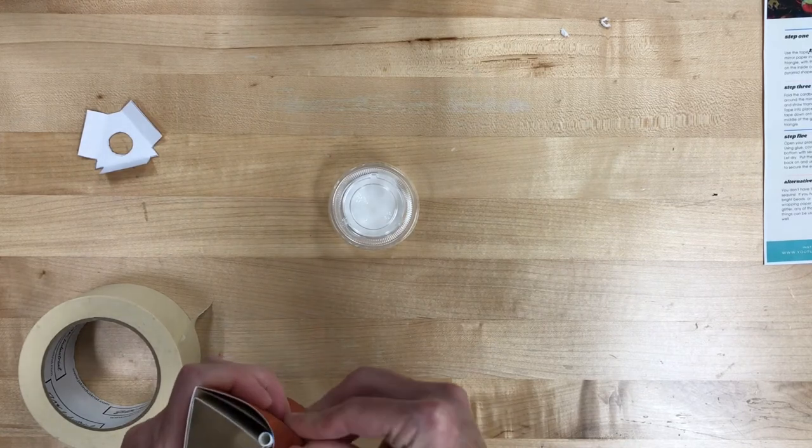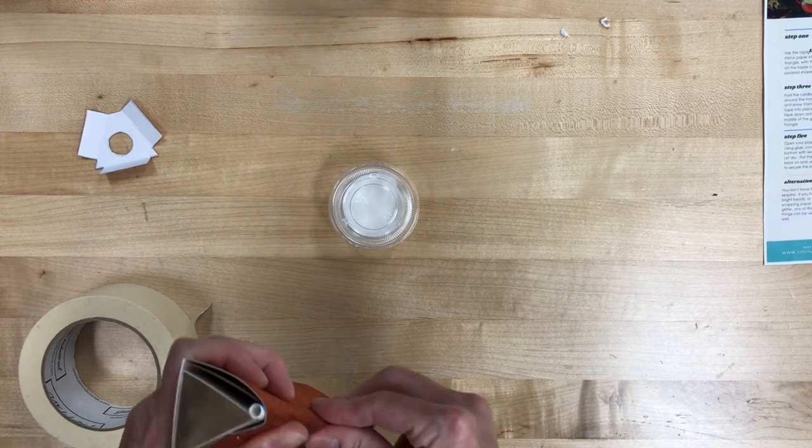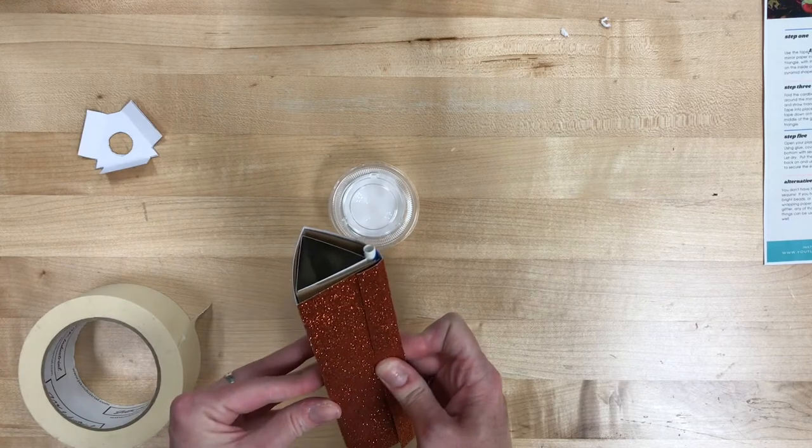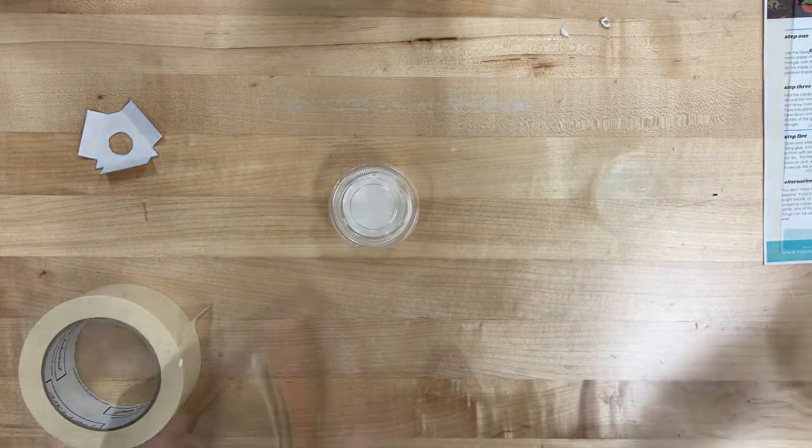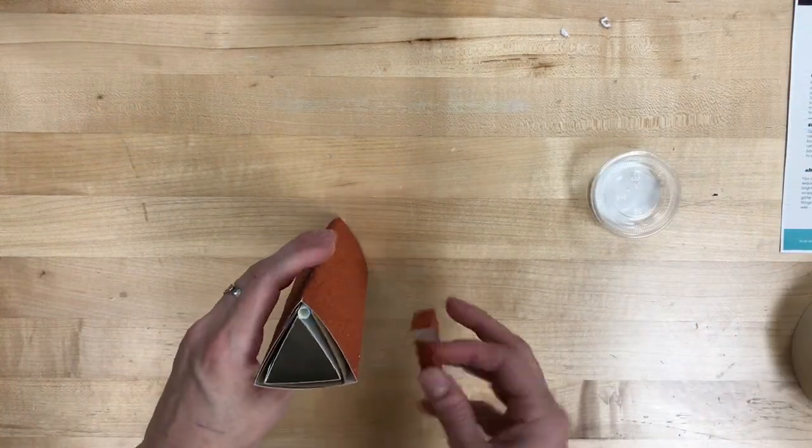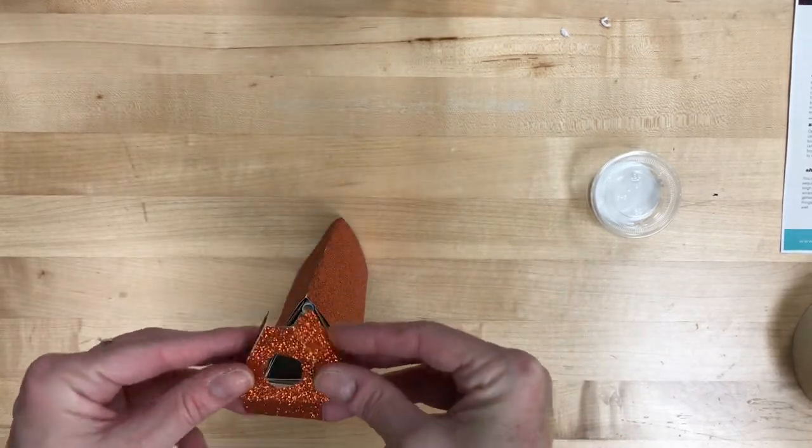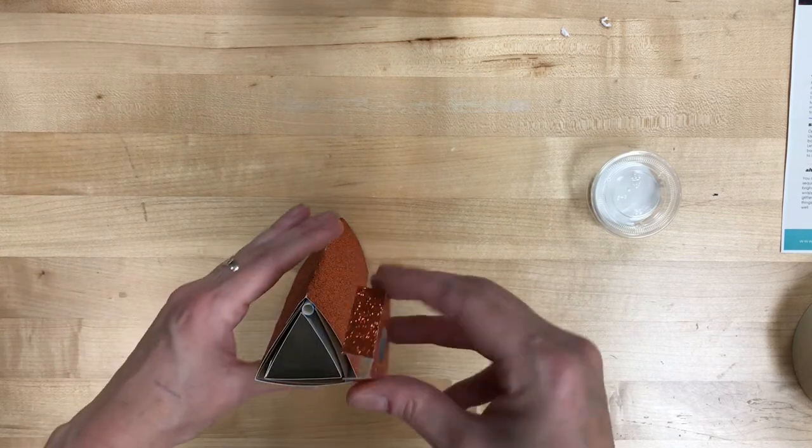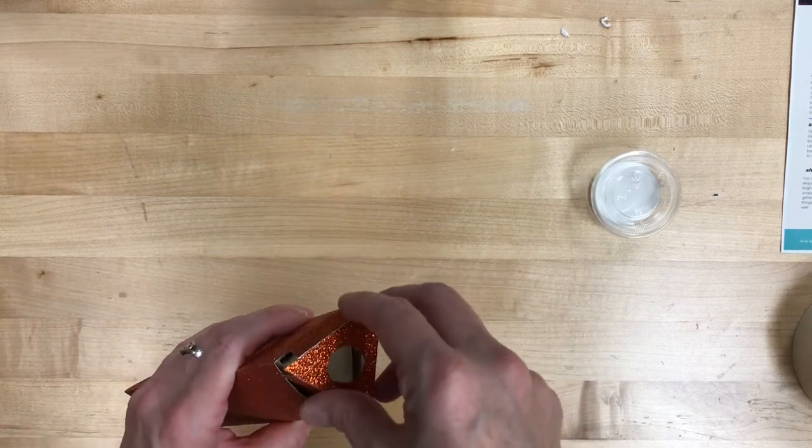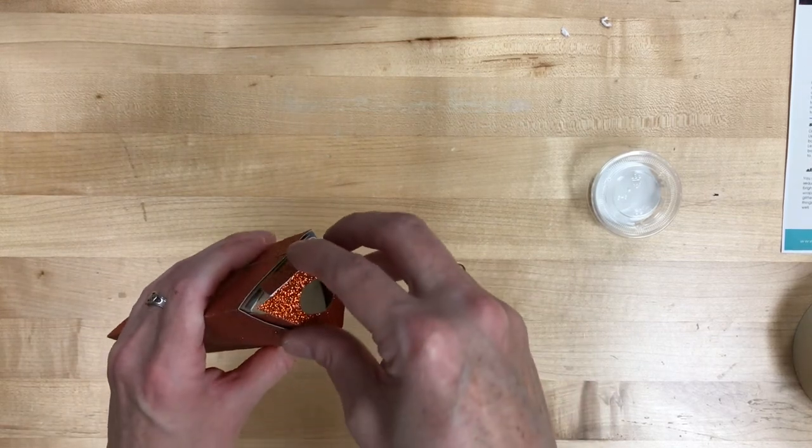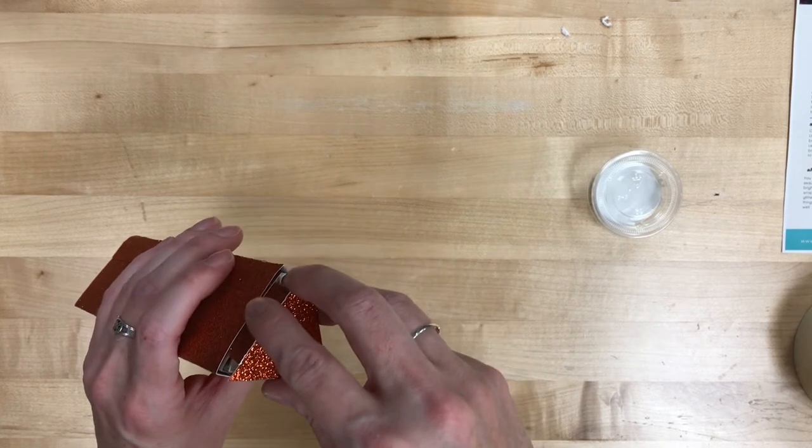You could even wrap some string around it to hold it in place and walk away and go do something else and come back if you need to. Then, once your glitter paper is secured, you're going to bend in the rectangles on the edges of this. This is our eyepiece. And it will fit in between the layers of that glitter paper and that cardboard.